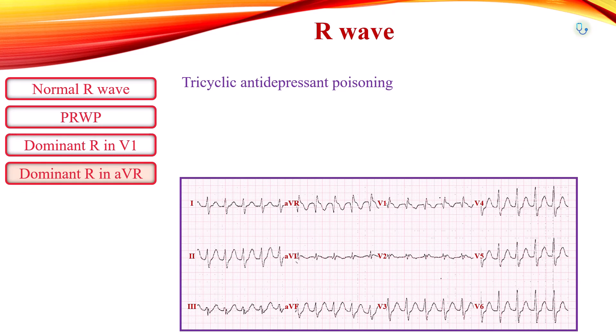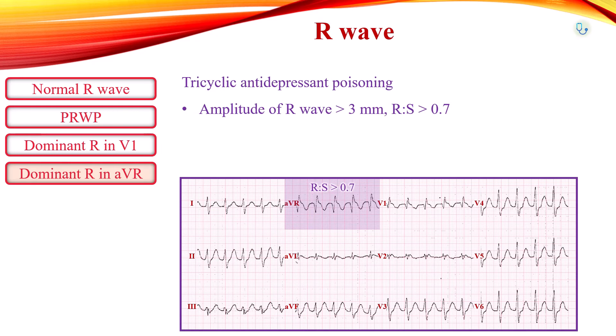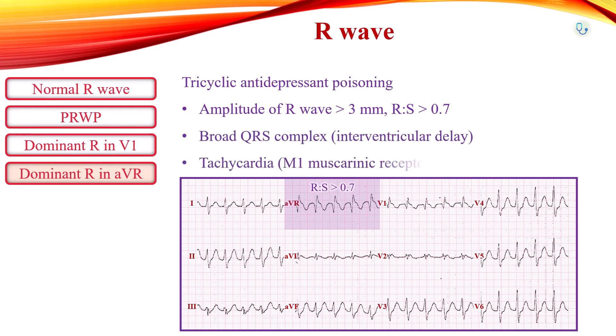In patients with suspected poisoning by sodium channel blocking agents such as tricyclic antidepressants, EKG is important for diagnosis. Poisoning with sodium channel blocking agents causes a characteristic terminal R-wave in AVR, with amplitude greater than 3 mm and an R-to-S ratio greater than 0.7. Widened QRS complex and sinus tachycardia can be observed due to intraventricular conduction delay and M1 muscarinic receptor blockade.